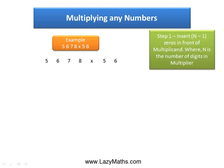The first step is to insert n-1 zeros in front of the multiplicand, which is 5,678, where n is the number of digits in the multiplier. The multiplier is 56, which has two digits — 5 and 6 — so n equals 2, and hence n-1 equals 2-1, which is 1.